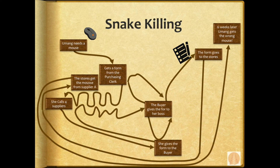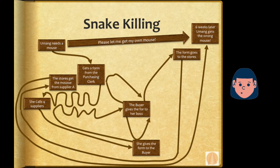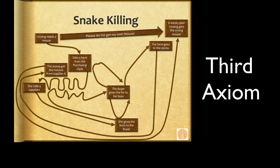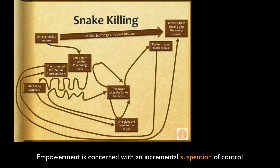Umang's thought is: 'Let me just get my own mouse.' If we allowed that, it would be problematic — it would actually undermine the principle articulated in the third axiom, which indicates that empowerment is concerned with an incremental suspension of control. Those tortured routes the task goes through are what we call snakes, and clearly the objective of these snakes is control.